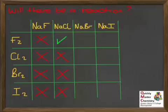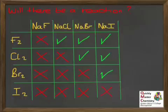For sodium bromide with its bromide ions, two reactions are possible. Both fluorine and chlorine are more oxidising than bromine because they're higher up in group 7, so they can both oxidise bromide ions, turning them into bromine. Finally, for sodium iodide with its iodide ions, three reactions are possible. Fluorine, chlorine, and bromine are all more oxidising than iodine, so they can all oxidise iodide ions.